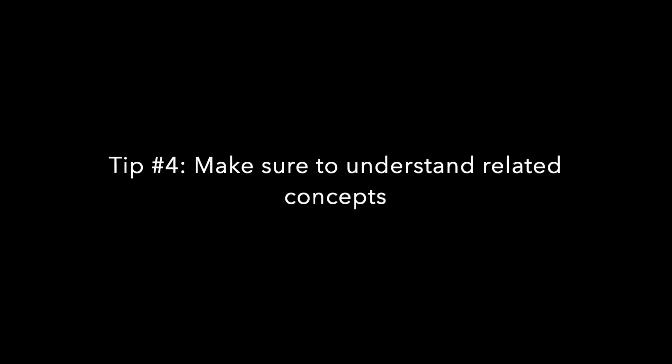Tip number three is to review all the answer choices and their explanations. When you're correcting your full-length exam, not only should you try to understand why the right answer is correct, but you should also look at the other answer choices and try to understand why those ones are incorrect. You will learn a lot of new and useful information, and on the MCAT it's a very useful skill to be able to eliminate wrong answer choices rather than trying to pinpoint the correct answer. Practicing this when correcting your full-lengths will make it a lot easier to do on test day.